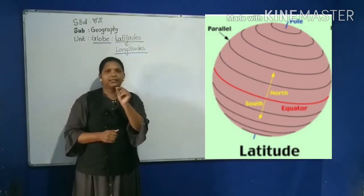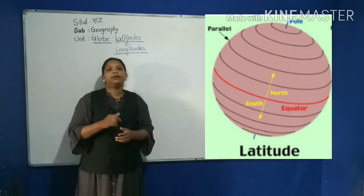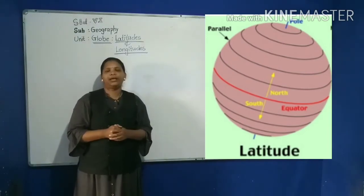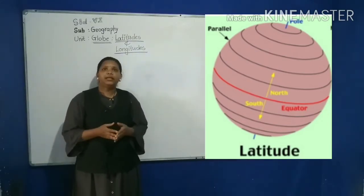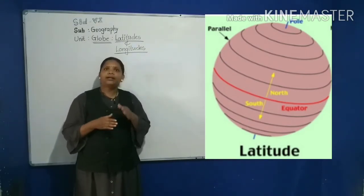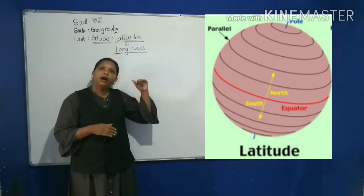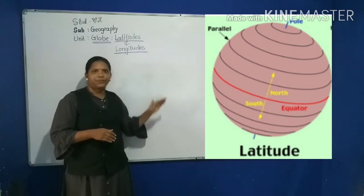The equator is the longest parallel or the longest latitude. The length of the parallel starts decreasing as one moves away from the equator towards the poles.